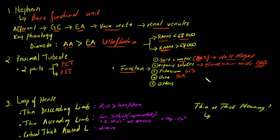Urea is not actively reabsorbed — its concentration in the filtrate is much higher than in the blood. Additionally, phosphate and citrate are about 70 to 80% reabsorbed in the proximal tubule.